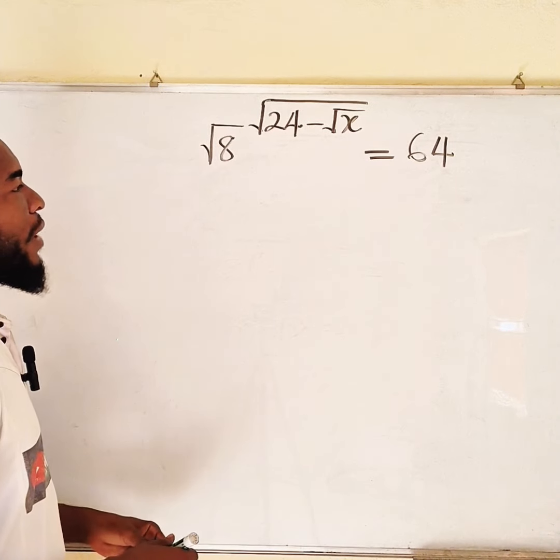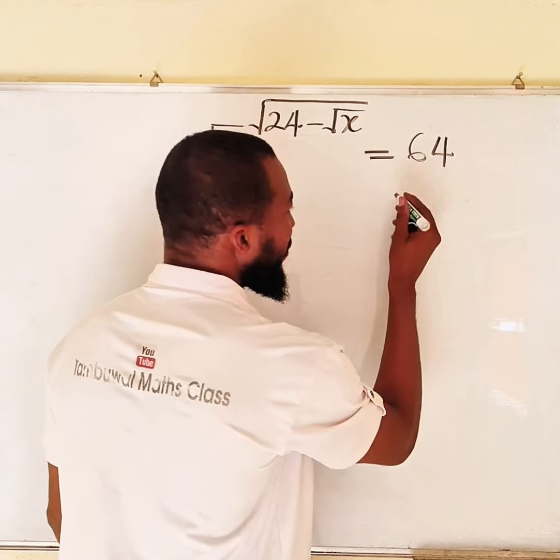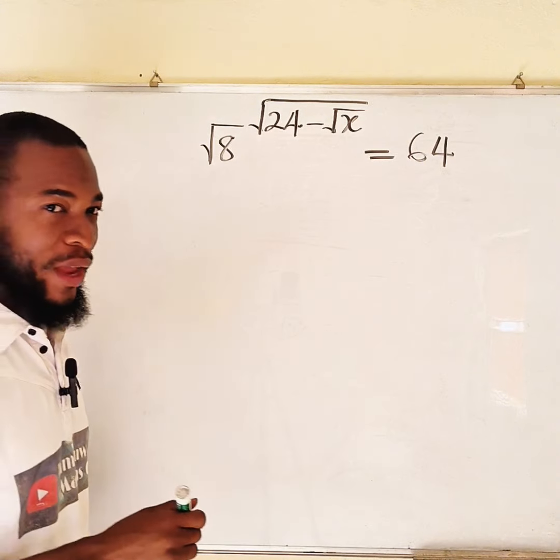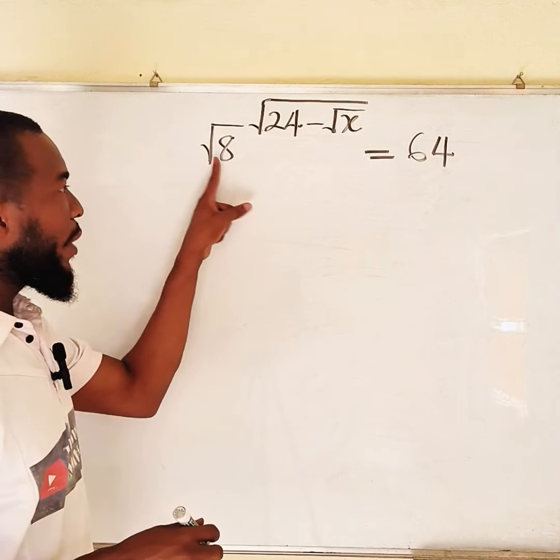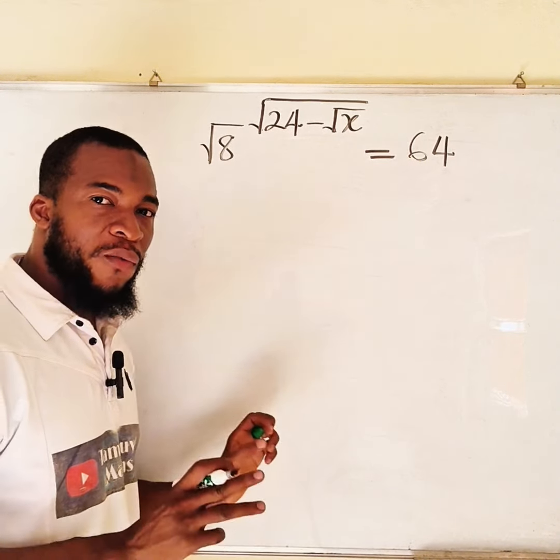Okay. I know that I can write 64 as 8 squared, and also square root of 8 as 8 to the power of 1 over 2.